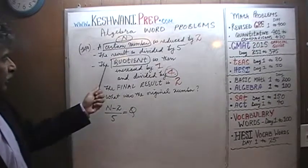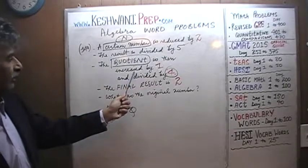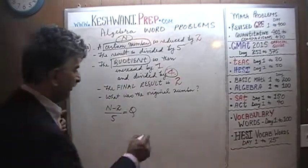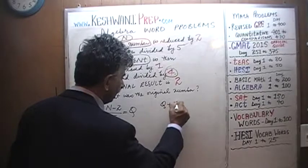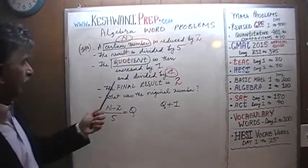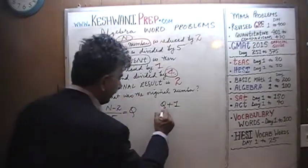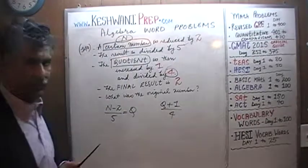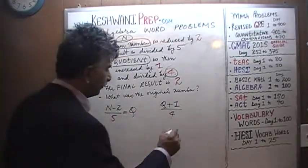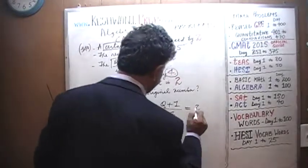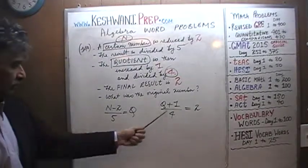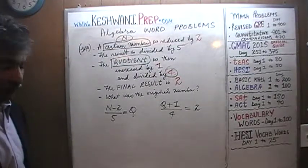What are we going to do with that quotient? We are told that the quotient is then increased by 1. So here is our quotient. We are going to increase it by 1 and divide by 4. And we are told that if we do that, the final result is 2. The question simply is, what did we start out with? These two equations are what we have to work with. We have two equations, two unknowns, pretty straightforward process.